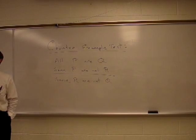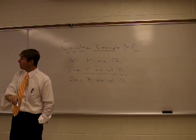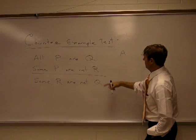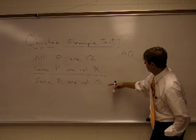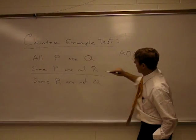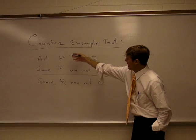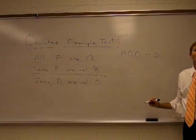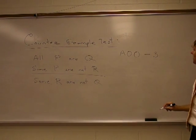Now, if we remember how to find our mood and our figure, our mood is A, O, and our conclusion's an O, and subject and subject is our middle term. This is an AOO-3 syllogism.